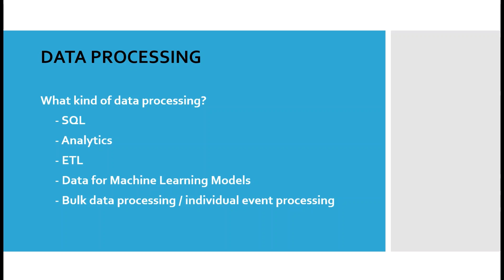Data for machine learning models is initially in a raw format, so you need to process it into a format understandable by the model — preparing data from raw form. This data can sometimes be huge, sometimes small. Additionally, bulk data processing involves petabytes of data; the streaming framework you choose should be capable of handling bulk amounts of data and performing distributed computing on it.